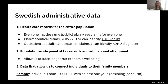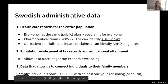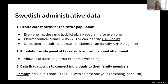We link this to a population-wide panel of tax records and educational attainments, which lets us trace the longer-run economic well-being of individuals. Our third source connects individuals to their family members. We form an analysis sample of all individuals born from 1990 to 1996 who have at least one younger sibling, or in some specifications at least one younger cousin.